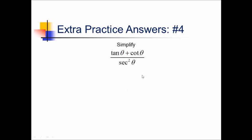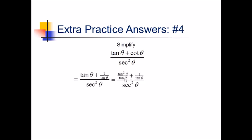On this problem, half the difficulty is figuring out how to get started — there are so many directions you could go. For example, you could try changing secant squared into something with tan squared, or split this up into two fractions. Another option is trying to merge tan and cotan into one single term up here. That's actually the option I went for, to simplify the numerator, because cotan is really 1 over tan. So I need a common denominator, which means multiplying tan by tan over tan — that'll be tan squared of theta over tan of theta. Adding these together gives tan squared plus 1 over tan, with secant squared still on the bottom.